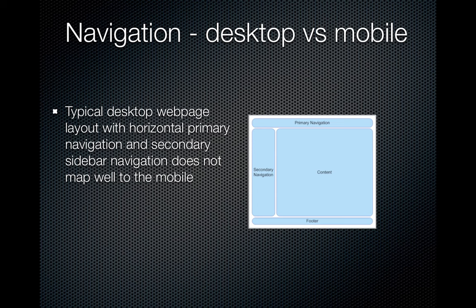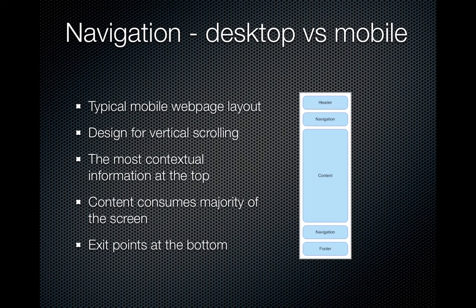Let's talk about navigation: desktop versus mobile. A typical desktop layout has content area, header, footer, and sidebar. In the mobile context, it's generally a single-column view, designed for vertical scrolling, with the most contextually relevant information at the top and content consuming most of the screen. Exit points are often repeated at the bottom because content can be long, and it's frustrating to scroll all the way back to the top to access navigation.